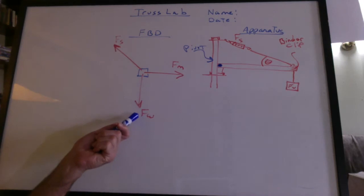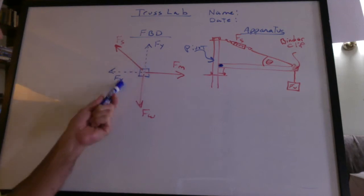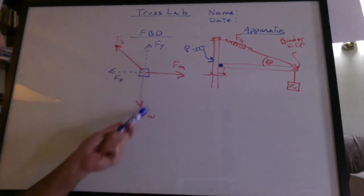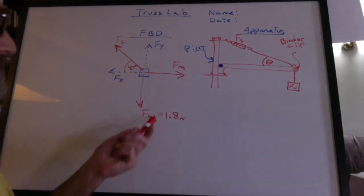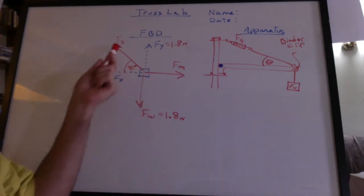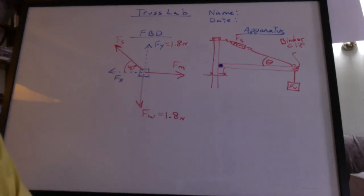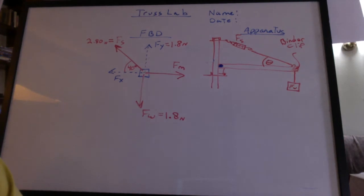So what does hold up this weight? We can break up this vector into two components. The y component must be holding up the weight. It's the only component that's going vertically. So that 1.8 newtons is going to be held up by the y component. And our job is to go find the force of the spring scale. And we get 2.80 newtons and that would be the theoretical value.